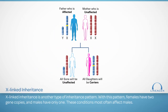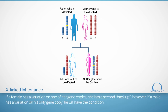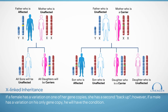X-linked inheritance is another type of inheritance pattern. These conditions are associated with genes on the X chromosome. Remember, females have two X chromosomes and males have only one. For this reason, conditions associated with X-linked genes most often affect males. If a female has a variation on one of her gene copies, she has a second backup copy. However, if a male has a variation on his only gene copy, he will have the condition. These conditions can be new in the child or inherited from a parent. If a father has an X-linked condition, each of his daughters will inherit the variation, because fathers pass their X chromosome to daughters and their Y chromosome to sons. If a mother carries an X-linked condition, each of her children will have a 1 in 2, or 50%, chance to inherit the variation. Daughters with the variation are not often affected and are usually called carriers.